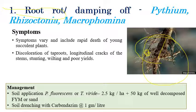Coming to the management aspect, soil application of Pseudomonas fluorescens or Trichoderma viride at the rate of 2.5 kg per hectare plus 50 kg of well-decomposed farmyard manure or sand application can give some relief from root rot disease. Soil drenching with Carbendazim at the rate of 1 gram per liter can also be recommended.